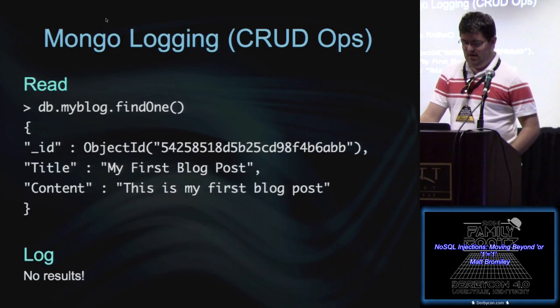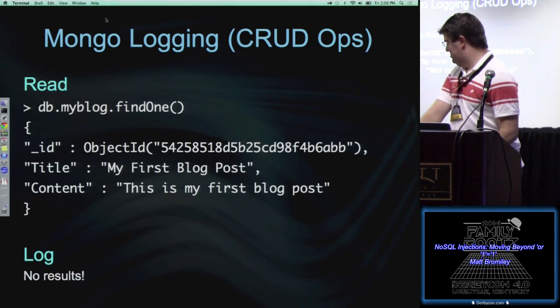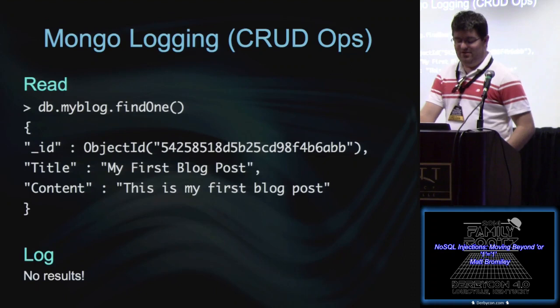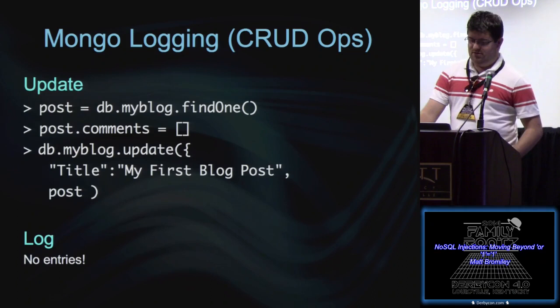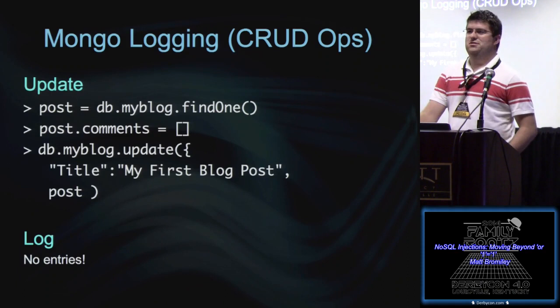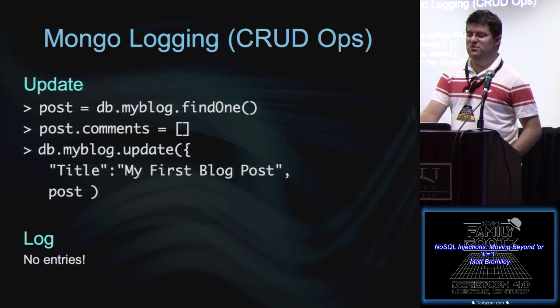We can run a simple find one command, which just picks a random document from the collection — and there are no log results. If anyone would like to see a live demo of this, I can do that afterwards. So reading: none. If you can get into a MongoDB, your connection is logged, but then you can read whatever you want without any record. Let's try updating a blog post — making a comments array and pushing that to the post. Again, no log entries. Two out of the three CRUD operations I've studied so far do not log.